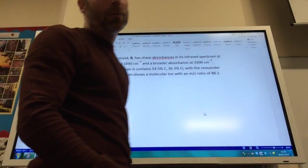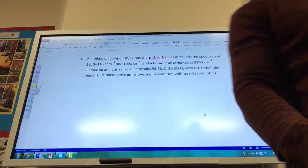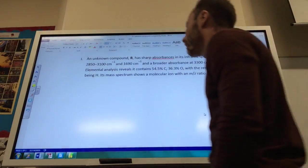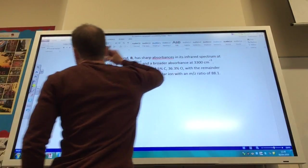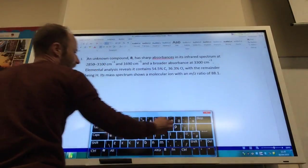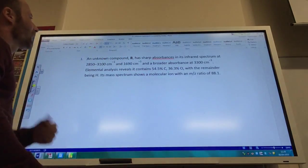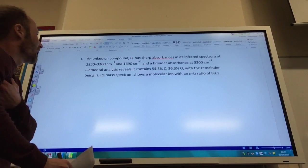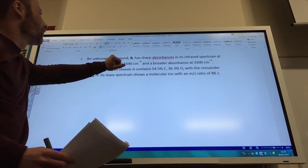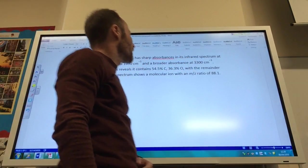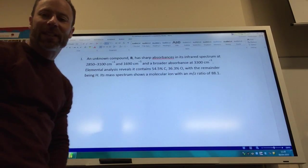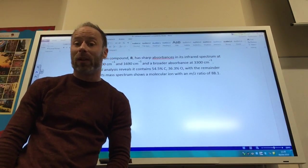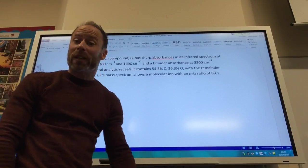Okay, so we're going to do a few examples now, just a couple of examples to try and identify a couple of compounds. Our first one is an unknown compound that has sharp absorbances in the IR at these two frequencies: broad absorbance at 3,300, and we've also got a little bit of elemental analysis and some mass spectra data as well. So let's have a look. The first thing I'd always do is your elemental analysis.